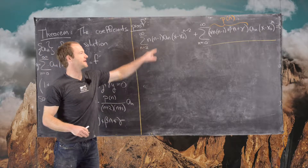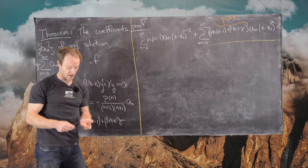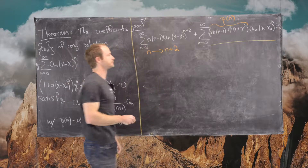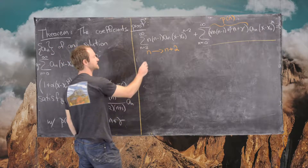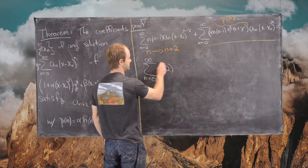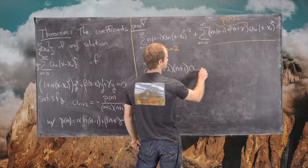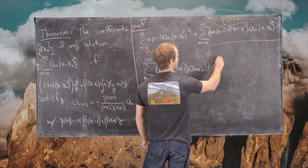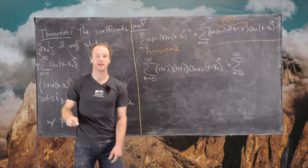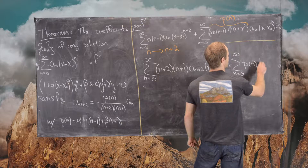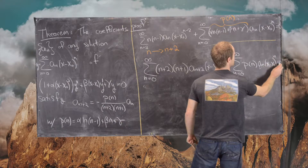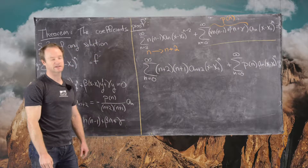We re-index the first sum by replacing n with n plus 2, which rewrites it as the sum from n equals 0 to infinity of (n+2)(n+1)·a_{n+2}·(x−x₀)^n. This is added to the sum from n equals 0 to infinity of P(n)·a_n·(x−x₀)^n, and all of this equals zero since we assumed the series is a solution to the differential equation.